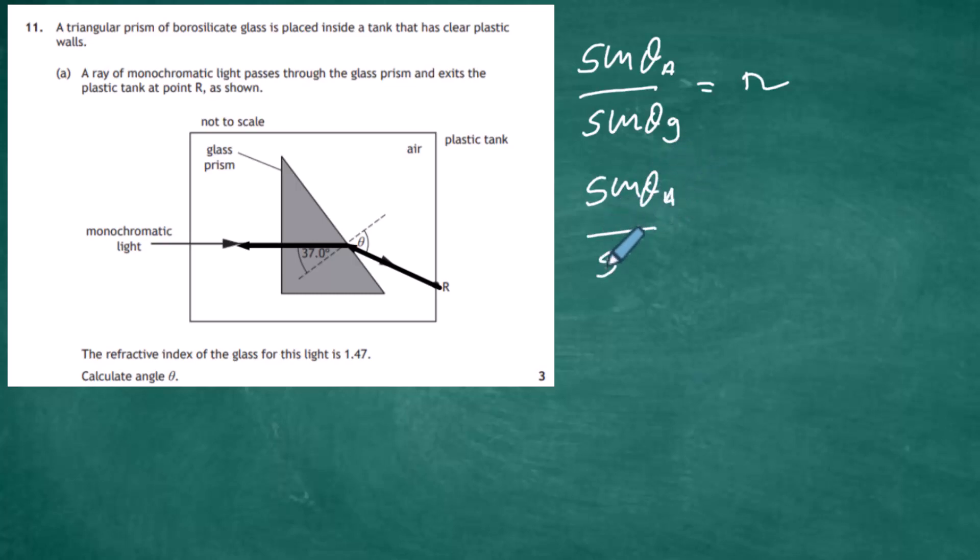We have sine theta in the air, and we're dividing that by sine theta in the glass, which is sine 37.0 degrees, and that should give us a refractive index of 1.47. We cross multiply and we get sine theta in the air is going to equal 1.47 multiplied by sine of 37.0 degrees. We do that in our calculator, we end up with theta A. Once we take the inverse of sine, that is going to be equal to 62.2 degrees. So the angle in which the ray of light leaves the prism is going to be 62.2 degrees.